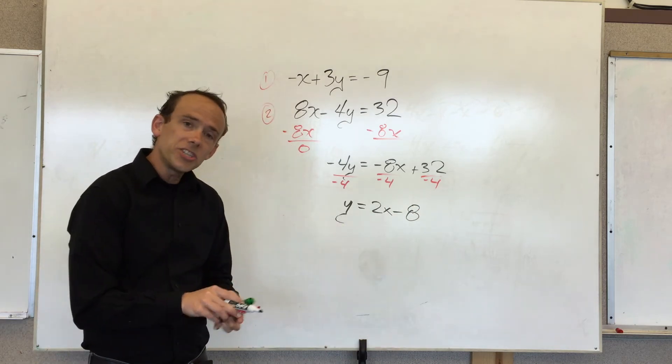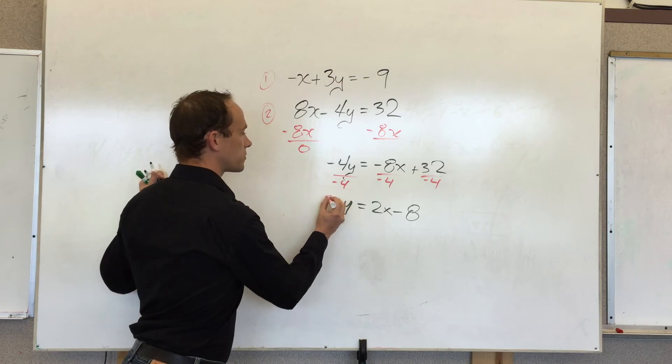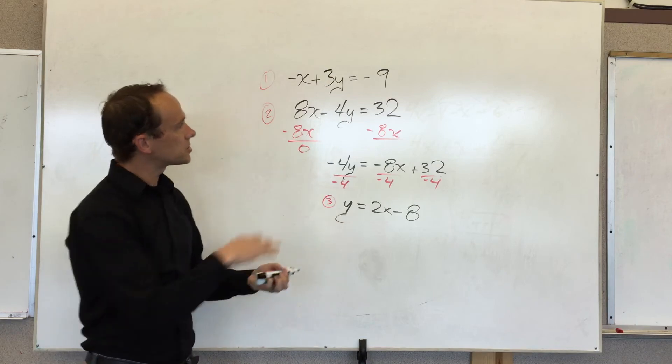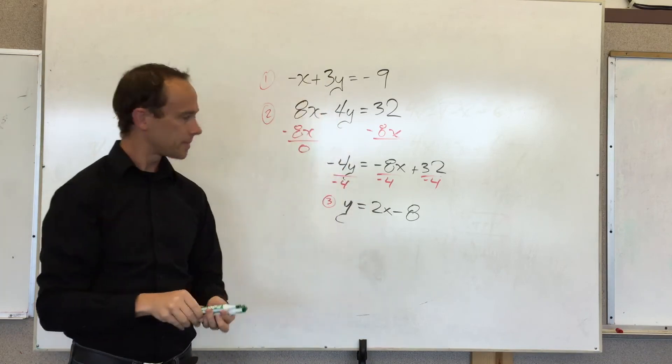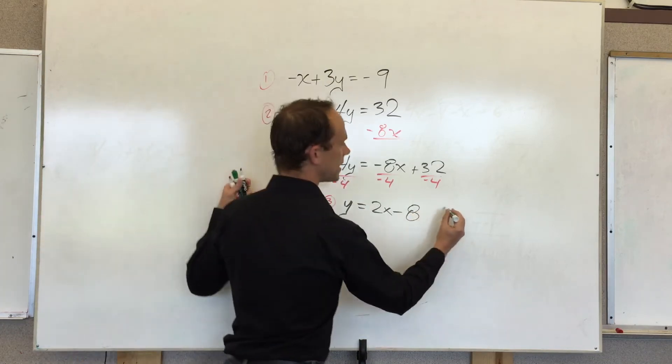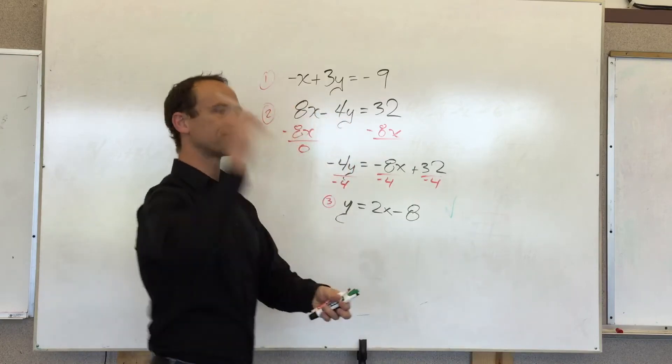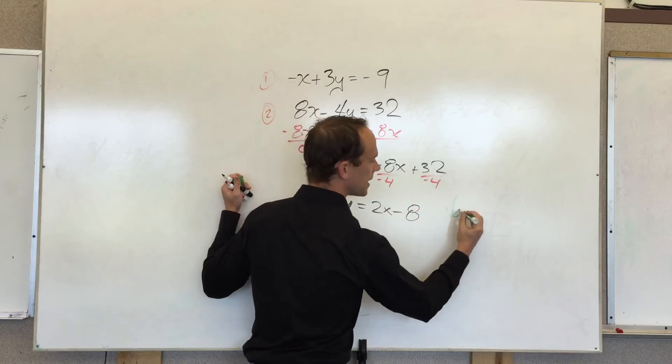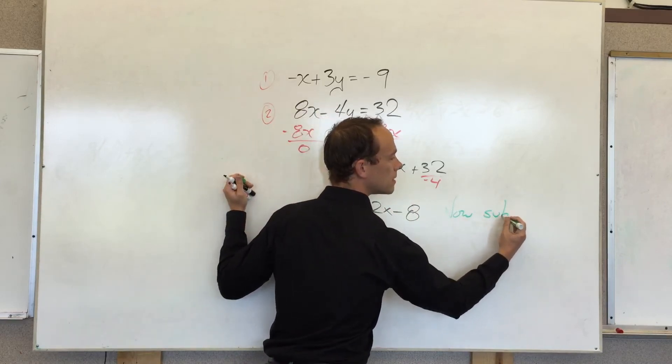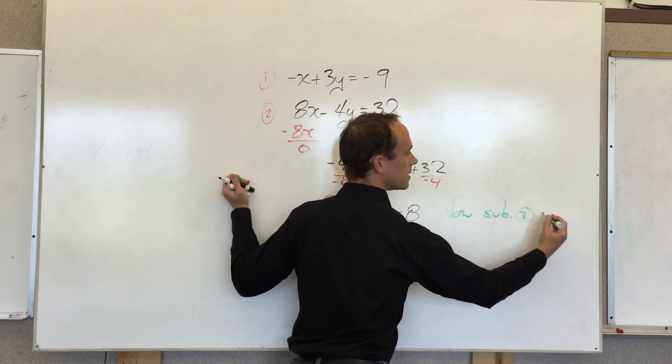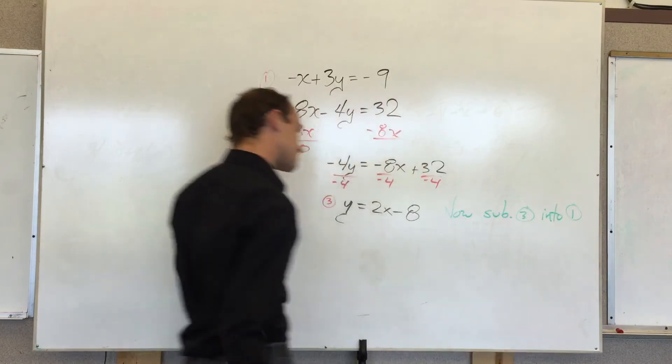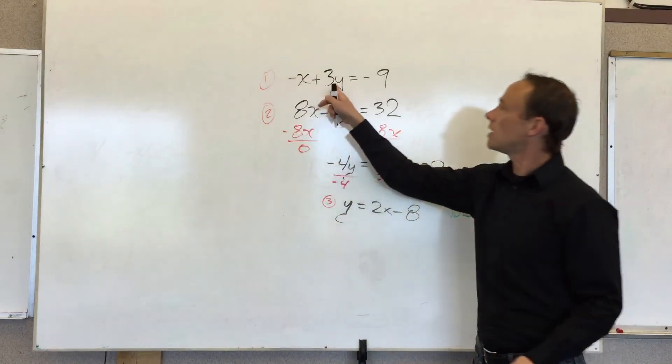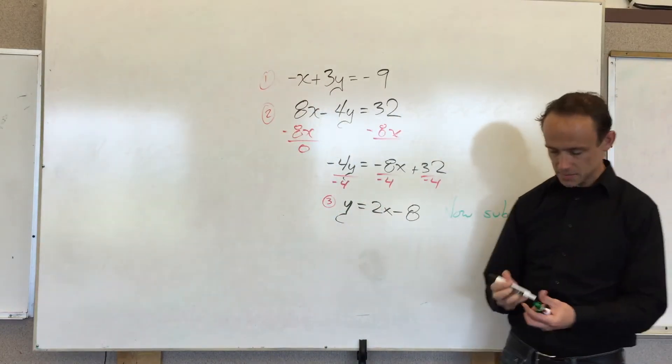We get y is equal to 2x minus 8. So, now I have an equation for y in terms of x. I'm going to call that 3. And I'm going to substitute 3 back into 1. Okay, so now, oh, you can't. Garbage. That was a swish, by the way. Now I'm going to sub 3 into 1. Let's get it. Come on, bring it. Let's bring it. So, wherever there's a y, I'm going to replace it with 2x minus 8.